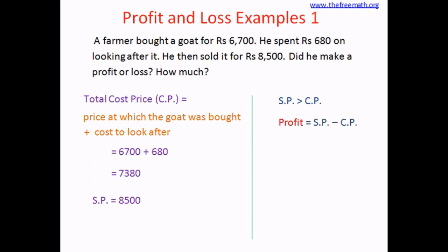Profit equals SP minus CP. That is 8,500 minus 7,380, which equals 1,120. It's easy to do the mental math: 7,380 plus 20 is 7,400, and 7,400 plus 1,100 equals 8,500. So that's why the subtraction is 1,120. Use the regular method if needed. The answer is that the farmer had 1,120 rupees of profit.